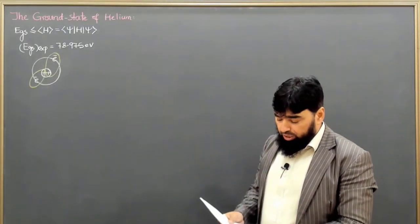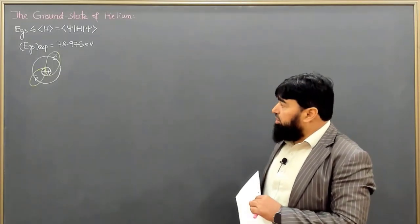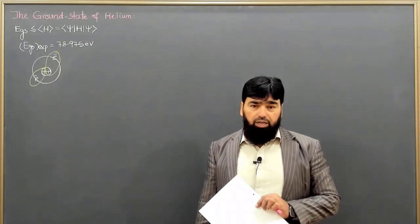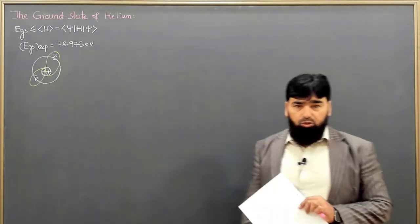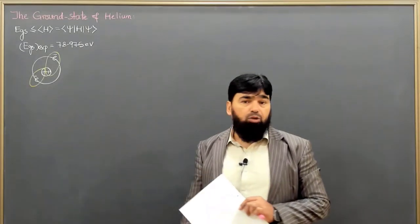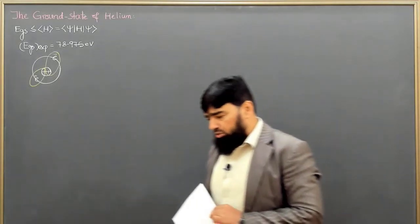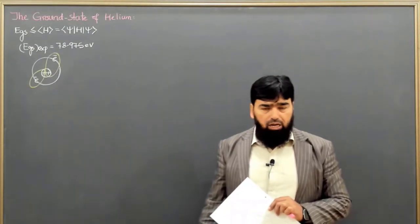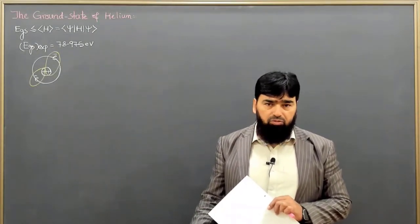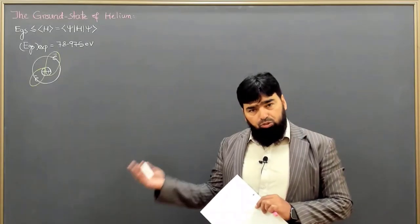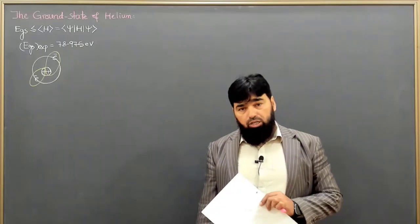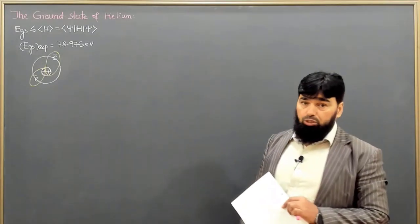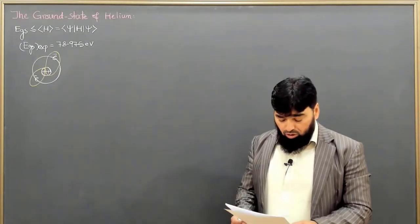We will start with the trial wave function, and to be on a safe side we will use the hydrogen atom wave function for the first orbit where n equals 1. We will ignore fine details such as orbital fine structure, hyperfine structure, and spin, trying to reach the helium ground state energy with a simpler calculation.